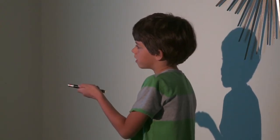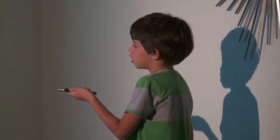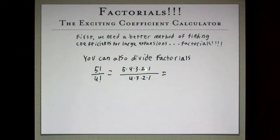You can also divide factorials. 5 factorial over 4 factorial equals 5 times 4 times 3 times 2 times 1 over 4 times 3 times 2 times 1. The 4, 3, 2s and 1 cancel out and you just get 5.